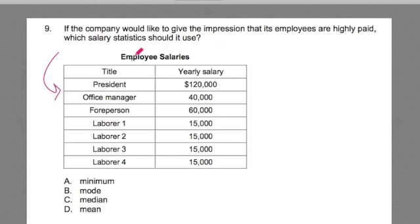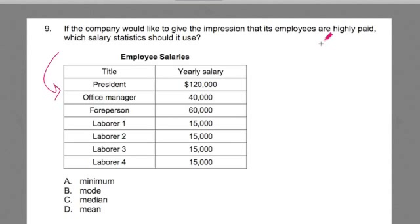So it's asking, given these salaries, which one of these statistical evaluations would yield the highest-looking salary? What we're going to do is examine each of these: the mean, median, mode, and minimum.